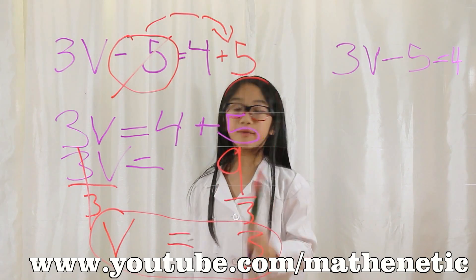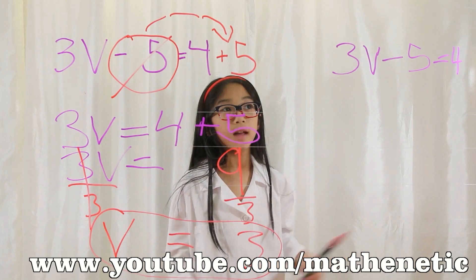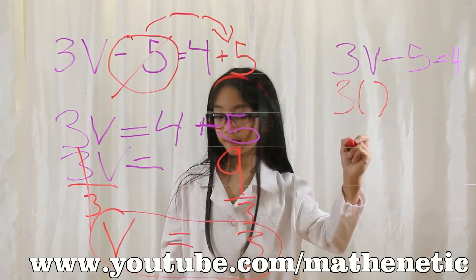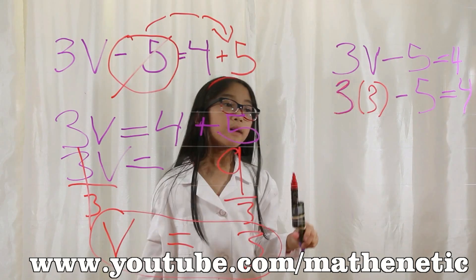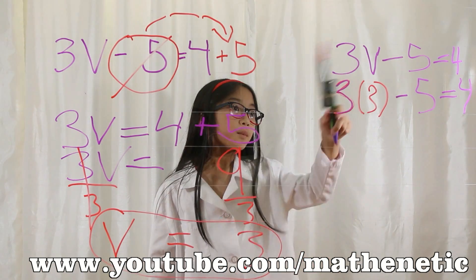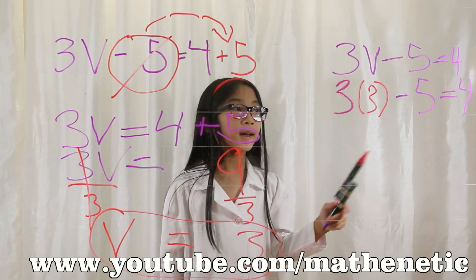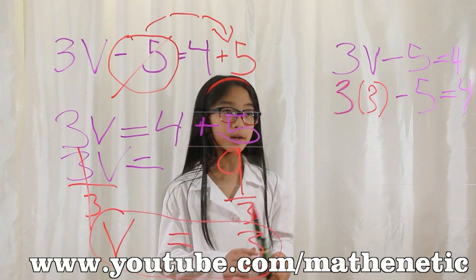I'm going to substitute v in. So the equation will look like 3 parentheses with 3 in it minus 5 equals 4. 3 times 3 is 9.